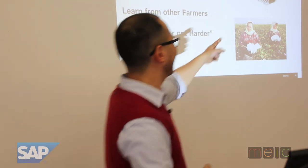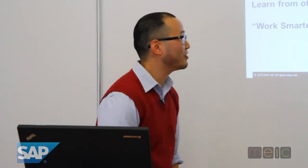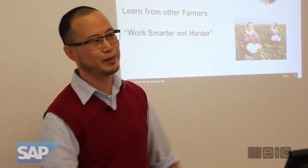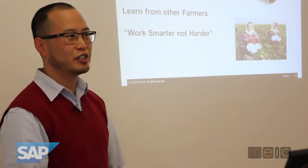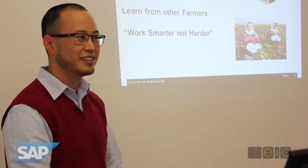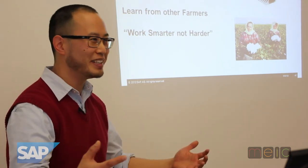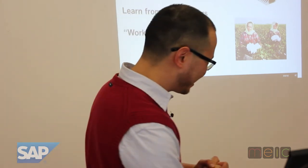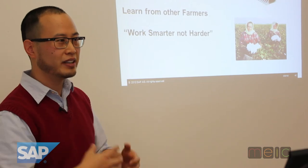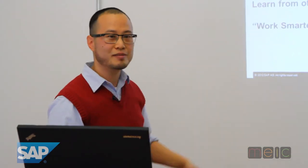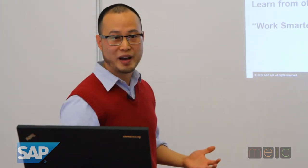Third one — does anybody know what that thing is up there? An international harvester. You can't really see it in this picture, but they're picking cotton. Cotton was very hard to pick a long time ago — it had to be manual. But somebody invented some technology and the world changed. The idea here is that knowledge is power. Technology is power. Use that to your advantage — you're in the technology industry.